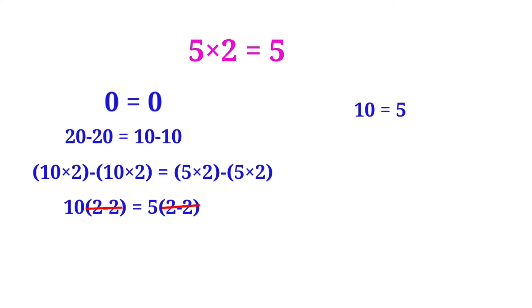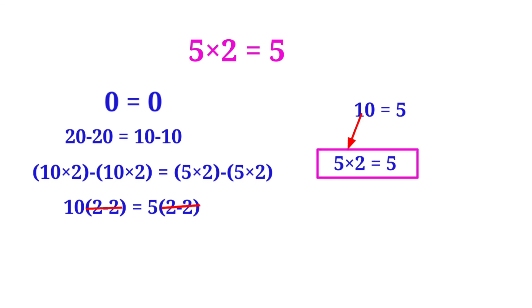Now the remaining is 10 is equal to 5. We can write that 10 as 5 into 2. So 5 into 2 is equal to 5 — now it is proved.